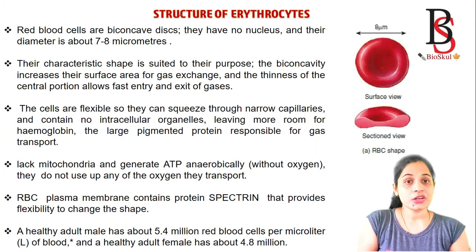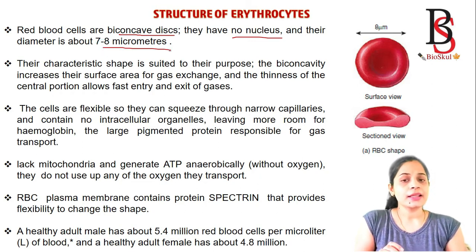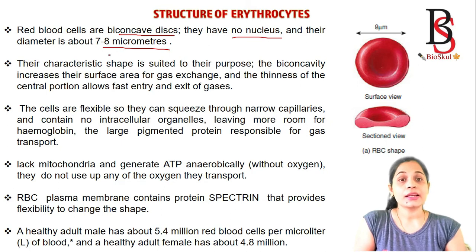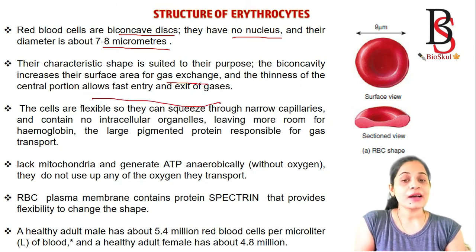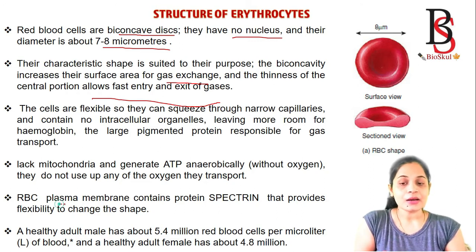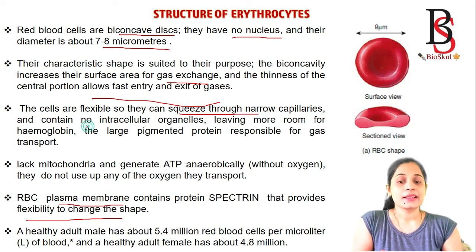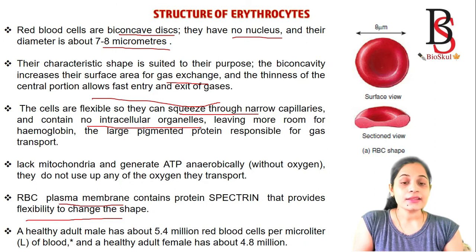Red blood cells are biconcave in shape, they have no nucleus, and their diameter is about seven to eight micrometers. The biconcave shape increases the surface area for gas exchange, and the thinness at the center allows fast entry and exit of gases. Red blood cells are flexible because of the protein spectrin in the plasma membrane, which helps them squeeze through narrow capillaries.